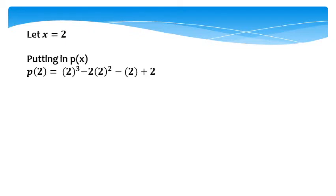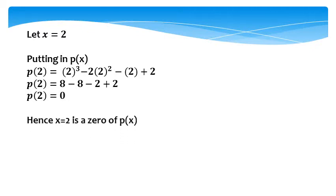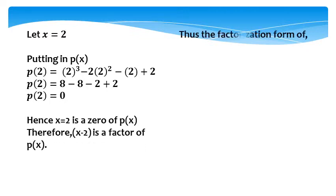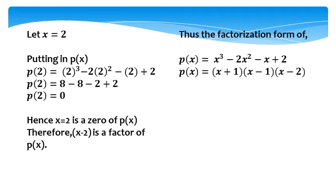Let x equal 2, putting it into p(x). After putting in the value of 2: p(2) equals 8 minus 8 minus 2 plus 2; all positive and negative values cancel, so p(2) equals 0. Hence, x equals 2 is a zero of p(x). Therefore, (x minus 2) is a factor of p(x). Thus, the factorized form of p(x) equals x³ minus 2x² minus x plus 2, which is (x plus 1)(x minus 1)(x minus 2).